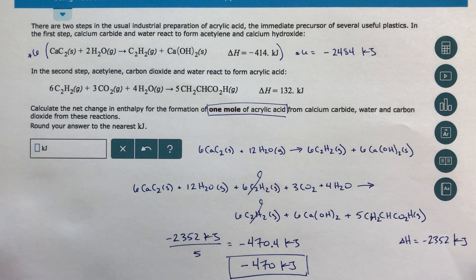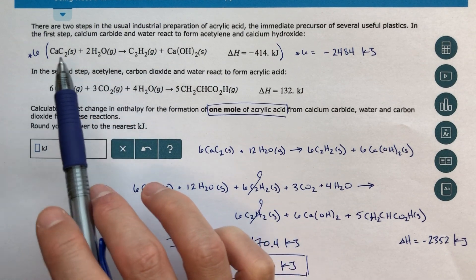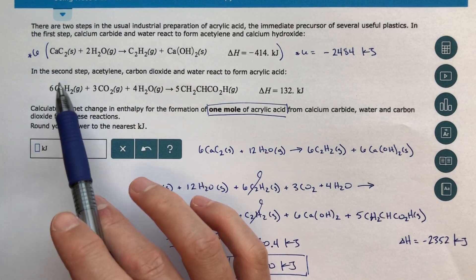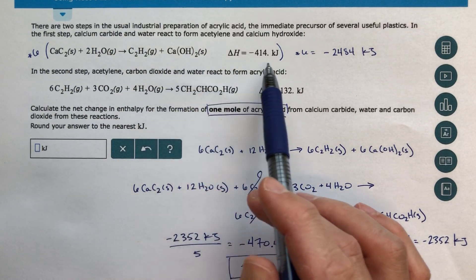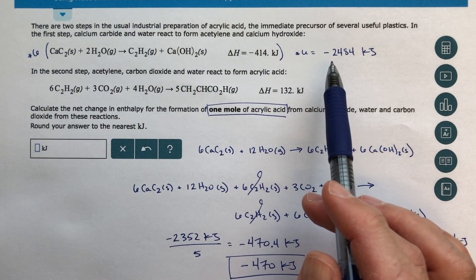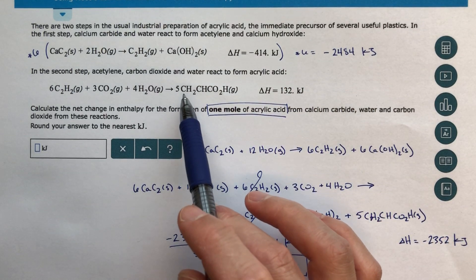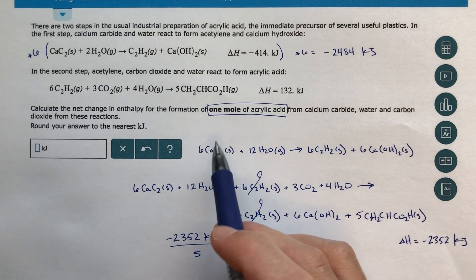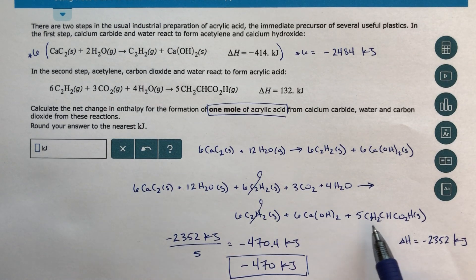So these problems, basically all you need to do, figure out what the intermediate is. Step one, balance out the intermediate. So if I've got six C2H2 here, I want to make it so I have six C2H2 up here. Then we're going to add the reactions together. So we're going to add our delta H's together. And then we're going to divide by whatever the coefficient is in front of our target molecule. So in this case, that's that acrylic acid. And when we add the reactions together, this gives us the delta H for when we have five moles. We only want one mole. So we're going to divide by five. That's our final answer. All right. Hope that helps.